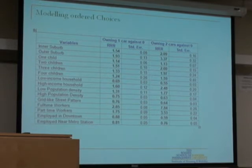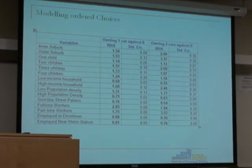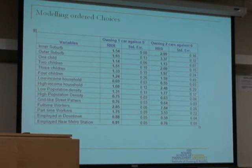We also consider whether employment location impacts automobile ownership. Those who work in downtowns or CBDs — which are served by public transit much better than the rest of the city — may not require as many cars since they can commute by transit, assuming it is available near their home. Such households would have a lower requirement for automobile ownership and would tend to own fewer cars.